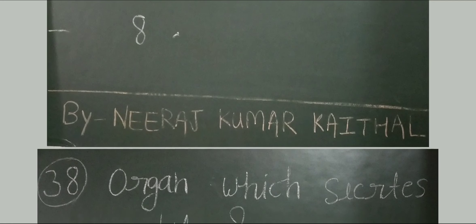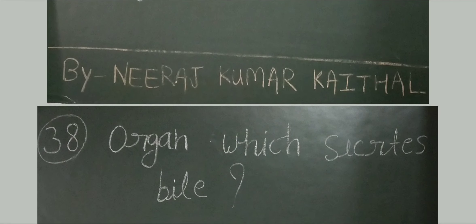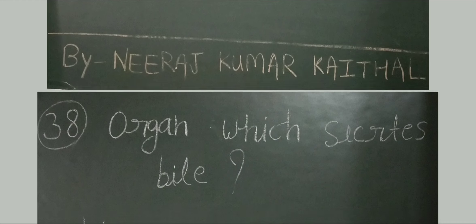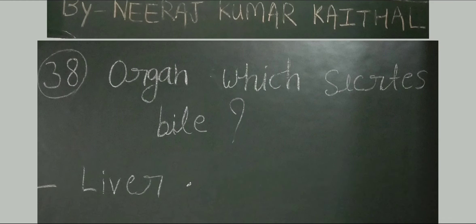Question number 38: which organ secretes bile? Bile is secreted by the liver. The production of bile is done by the liver, then it is transferred into the gallbladder. In the gallbladder, bile is stored for some time. When the body needs bile, it is secreted by the gallbladder.